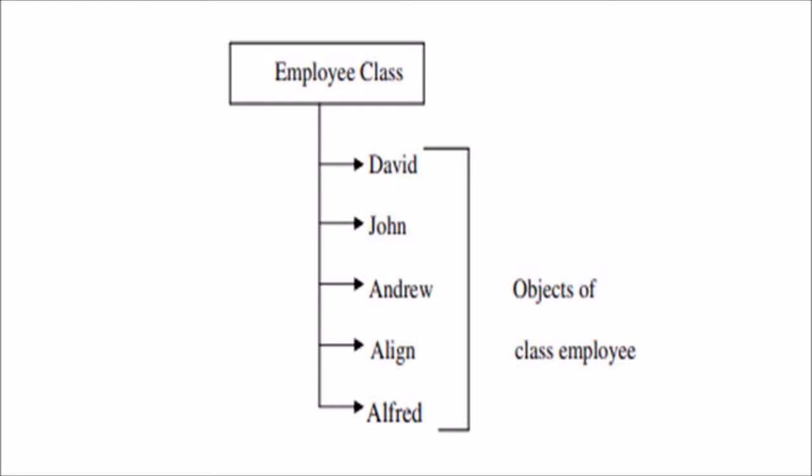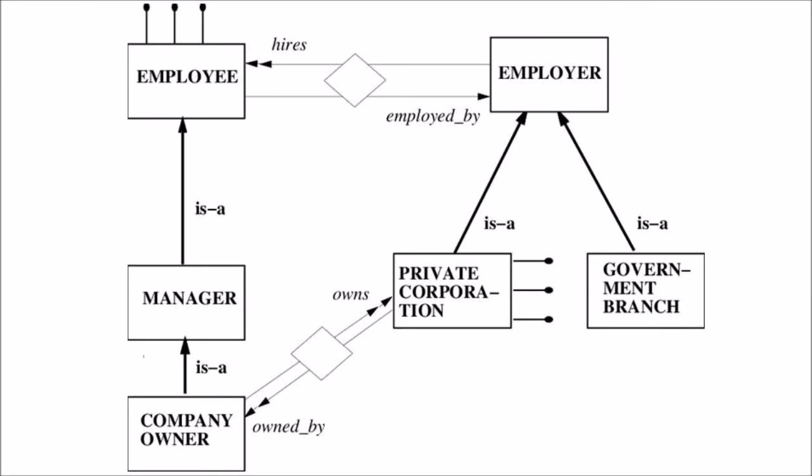There are some common protocols and some final outputs, but the individual operations are performed based upon the object's preferences, attributes, and other values the object is handling. For example, the method salary for objects like managers, clerks, and other employee types — all have the same method called salary. But the output of the salary depends upon the properties of that particular object.